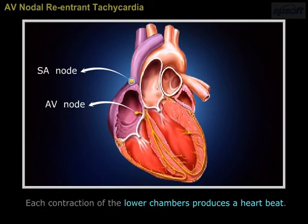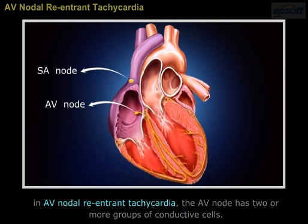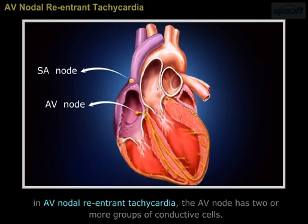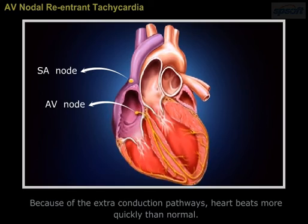The AV node normally has one group of cells through which an electrical impulse travels. However, in AV nodal re-entrant tachycardia, the AV node has two or more groups of conductive cells. Because of the extra conduction pathways, the heart beats more quickly than normal.